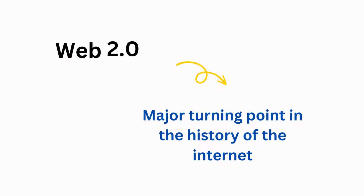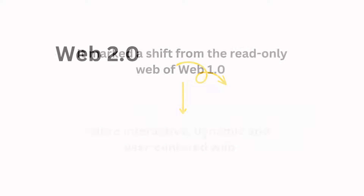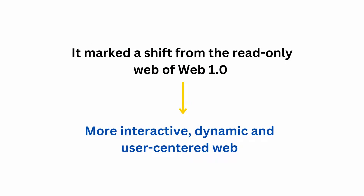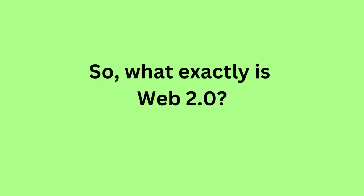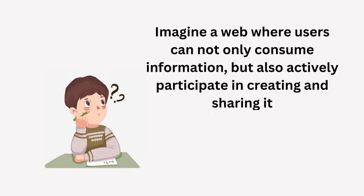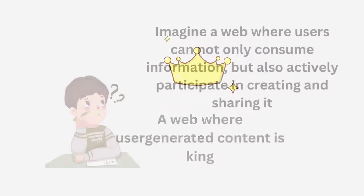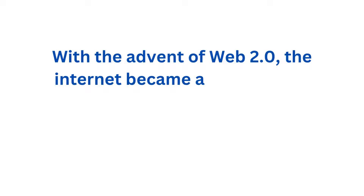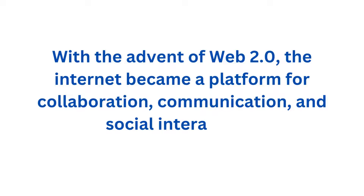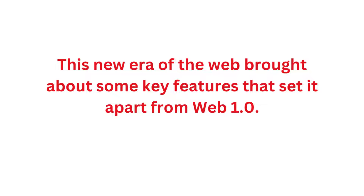Next, we move on to Web 2.0. Web 2.0 marked a major turning point in the history of the Internet — a shift from the read-only web of Web 1.0 to a more interactive, dynamic, and user-centered web. So what exactly is Web 2.0? Imagine a web where users can not only consume information, but also actively participate in creating and sharing it — a web where user-generated content is king. That's the essence of Web 2.0. With the advent of Web 2.0, the Internet became a platform for collaboration, communication, and social interaction. This new era of the web brought about some key features that set it apart from Web 1.0.